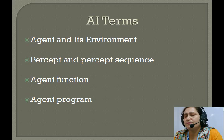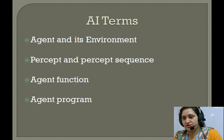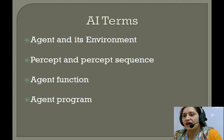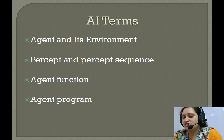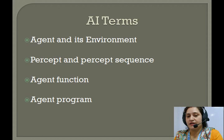If the next state of the environment is completely determined by the current state and the action of the agent, then the environment is deterministic; otherwise it is non-deterministic. In an episodic environment, each episode consists of the agent perceiving and then acting. The quality of its action depends on the episode itself. Subsequent episodes do not depend on the actions in the previous episode. Episodic environments are much simpler because the agent does not need to think ahead.